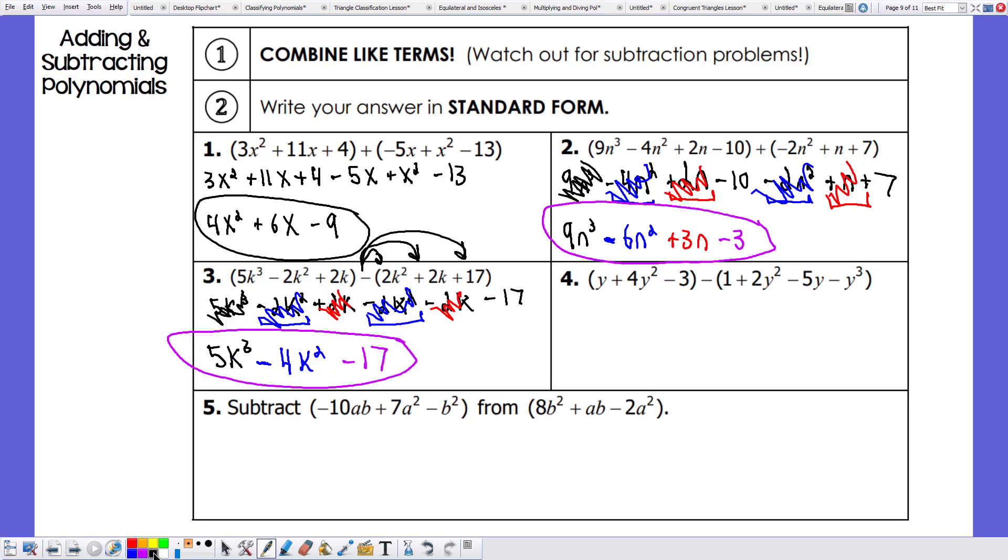We can see it's the same process, just the only difference being distribute that negative. So looking at 4, keep the first pair of parentheses the same. So y plus 4y squared minus 3. Distribute the negative. So negative 1, negative 2y squared. Negative, negative 5y. Two negatives become a positive, so it's plus 5y. And negative, negative y to the third becomes plus y to the third. Two negatives canceling out again.